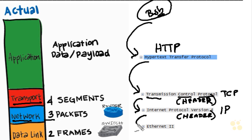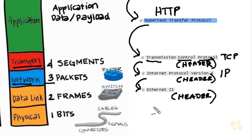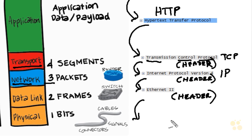Then it gets handed down to the envelope stuffer — the data link layer at layer 2. On an Ethernet network, the data link layer also adds header information: the source MAC address and destination MAC address — the media access control address, also called the layer 2 address. Once that information is added, it's handed down to the physical layer, which sends that information like a telegraph operator on steroids — millions of times a minute on the network.